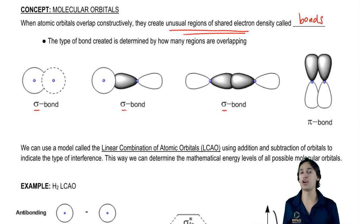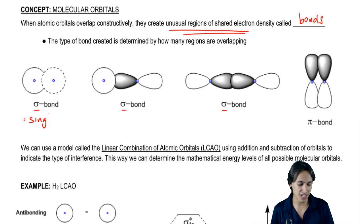First of all, you should know that sigma is synonymous with the word single. So whenever I say a single bond, I'm always referring to a sigma bond.